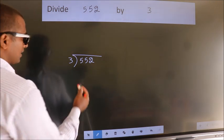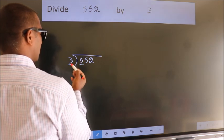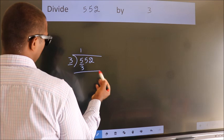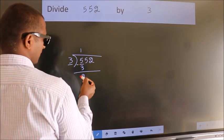Here we have 5, here 3. A number close to 5 in 3 table is 3 once 3. Now, we should subtract. We get 2.